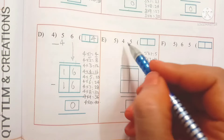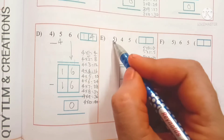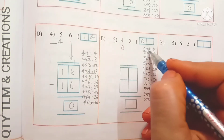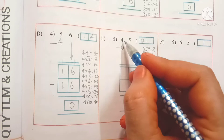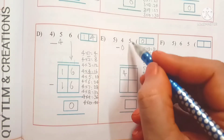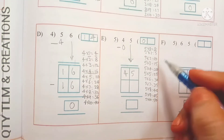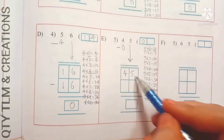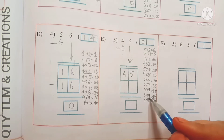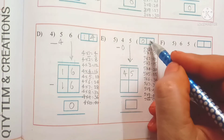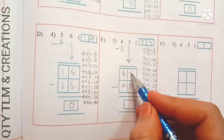Next E: 45 divided by 5. Here 4 is less than 5, so we write 0 in the quotient's place and 0 under 4. Subtract 0 from 4: we get 4. Bring down 5; it becomes 45. 5 nines are 45, so write 9 in the ones place. Write 45 under 45 and subtract: we get 0.